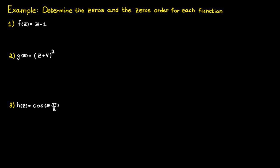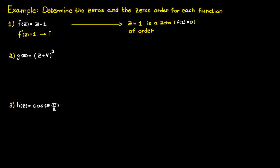Let's determine the zeros and the zero's order for each function. In the first case, we can see that C equals 1 is a zero, since the function evaluated at this point is equal to zero. We can determine its order by deriving: the first derivative evaluated at 1 is not equal to zero, and therefore the order of the zero is equal to 1.